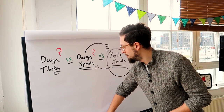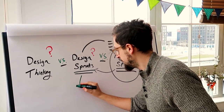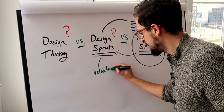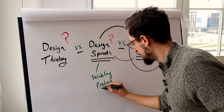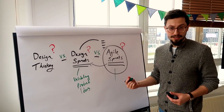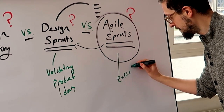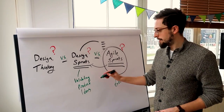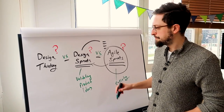So to recap: design sprints are about validating product ideas, and agile sprints are for executing and developing the software. Usually a design sprint would come before the agile sprint.